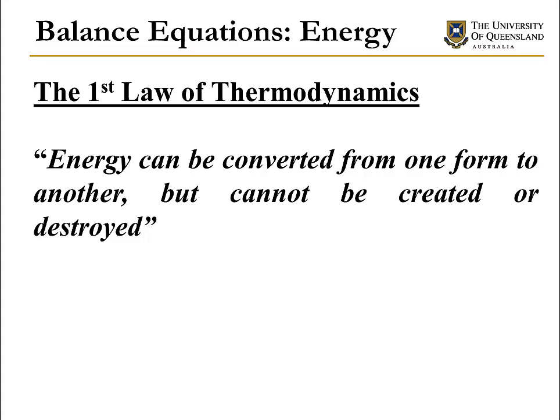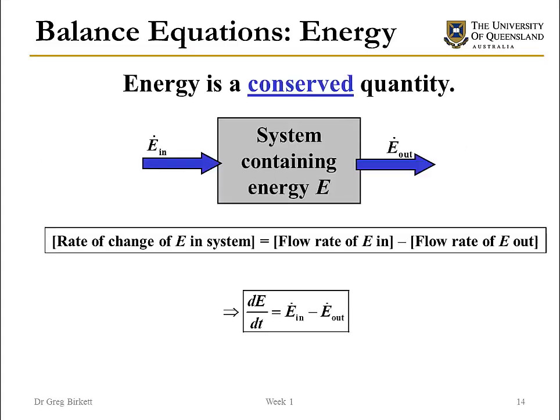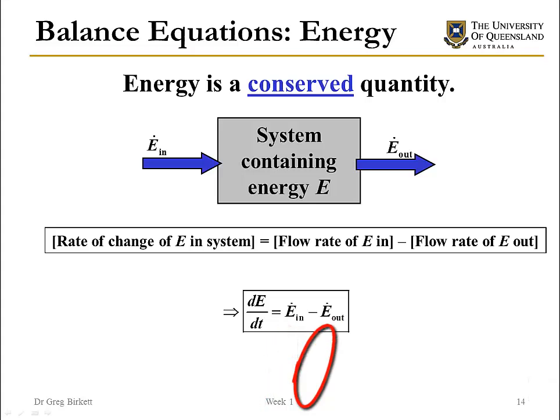Turning to energy and balance equations, this is where we run into the first law of thermodynamics: that energy can be converted from one form to another, but cannot be created or destroyed. That statement says energy is a conserved quantity. So whatever energy we have, it will be conserved in one form or another. Because it is conserved, we get the directly analogous equation to the mass balance — the rate of change of energy in the system equals the flow of energy in minus the flow of energy out.